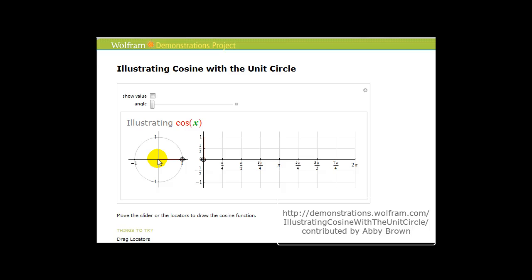Remember that the cosine function is equal to the x-coordinate of the point where the terminal side of the angle would intersect the unit circle. So as we animate this point on the unit circle, on the right we'll be plotting the points where the x-coordinate represents the angle and the y-coordinate would be the value of the cosine function, which again is equal to the x-coordinate of the point on the unit circle.